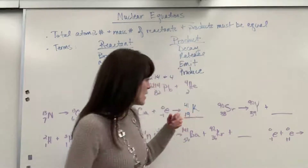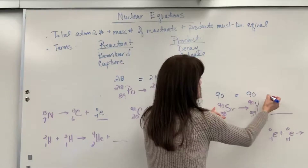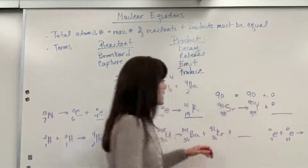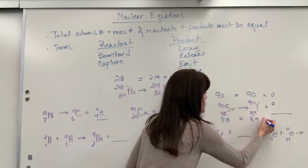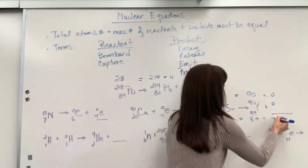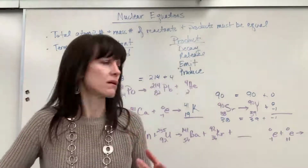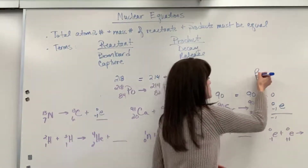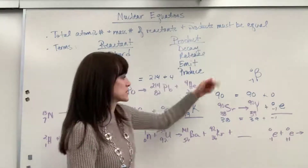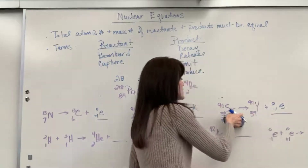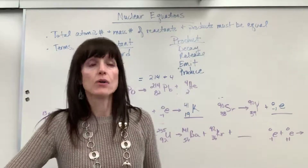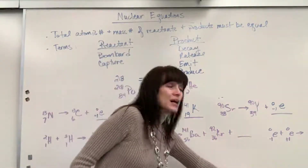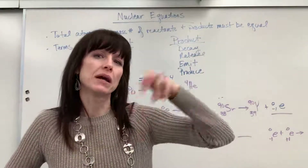I have strontium-90. We have 90 equals 90 plus zero — 90 plus zero equals 90. Then 38 equals 39 plus what? 39 plus minus one gives me 38. What particle has a zero for the mass number and a minus one for the atomic number? It's a beta particle. You could write E or B — those are the same thing. How I'd say this: strontium-90 undergoes beta decay, releases a beta particle, or undergoes a beta emission — any of those words means the beta particle is on the product side.